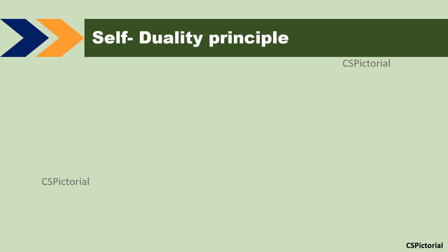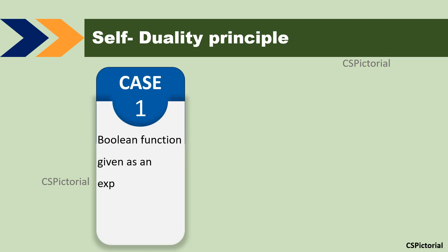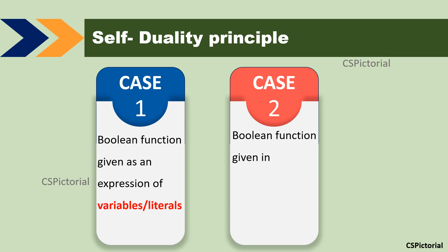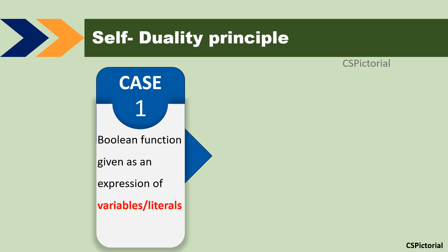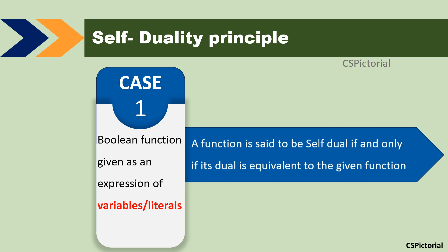Now comes the actual concept of this video, the self-duality principle. There are two cases. In the first case, the Boolean function is given as an expression in terms of variables or literals. In the second case, the Boolean function is given in terms of minterms. For the first case, the self-duality principle states that the function is said to be self-dual if and only if its dual is equivalent to the given function.